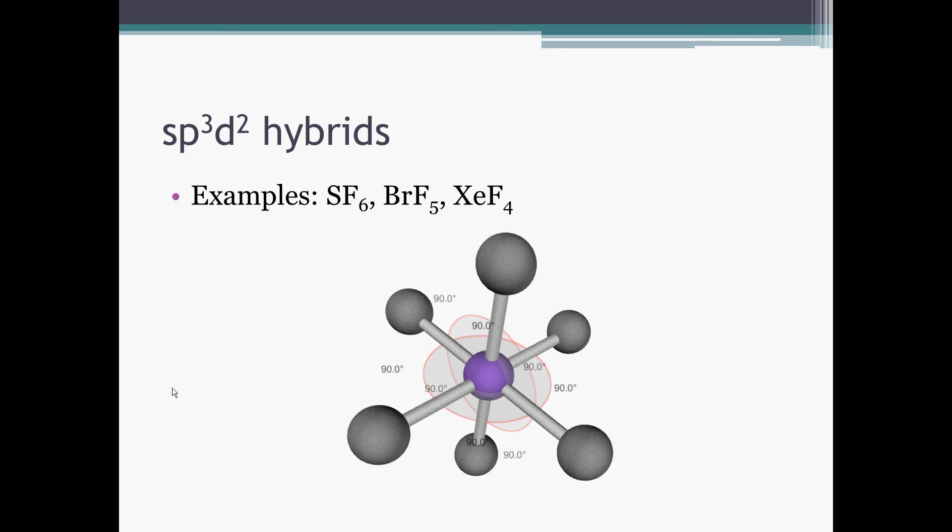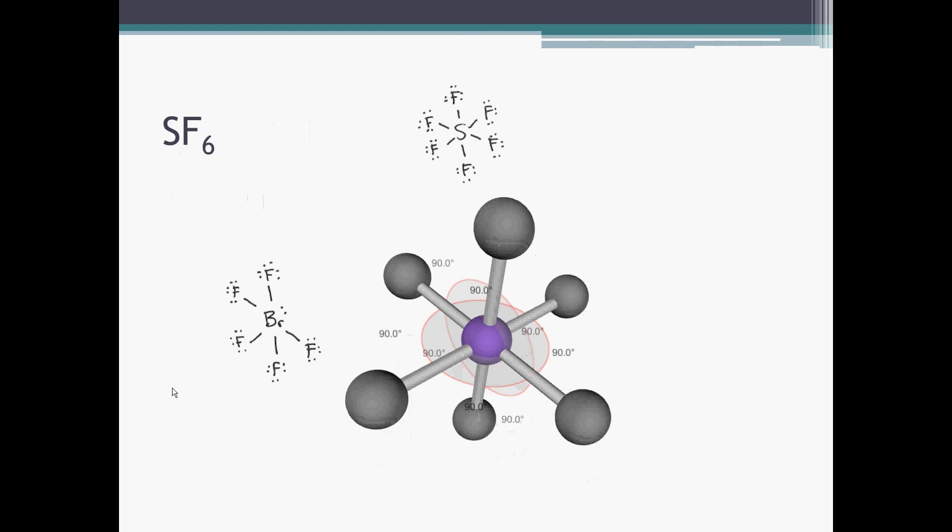If we go to six electron domains, that's the SP3D2 hybrids, six hybrid orbital domains involved in the bonding. SF6 is an example, and we can see in SF6 that we have 90 degrees among all of the atoms. This is what we call an octahedral shape.